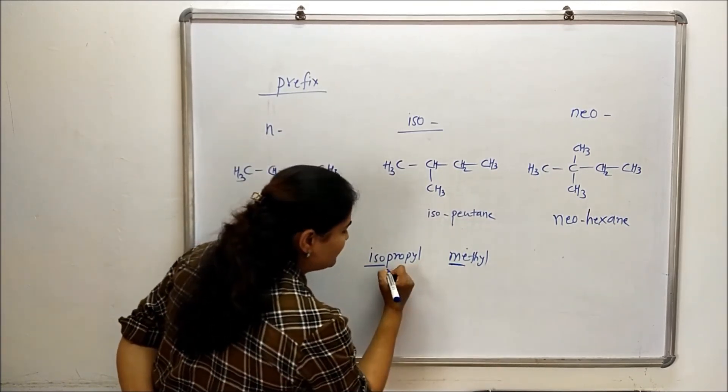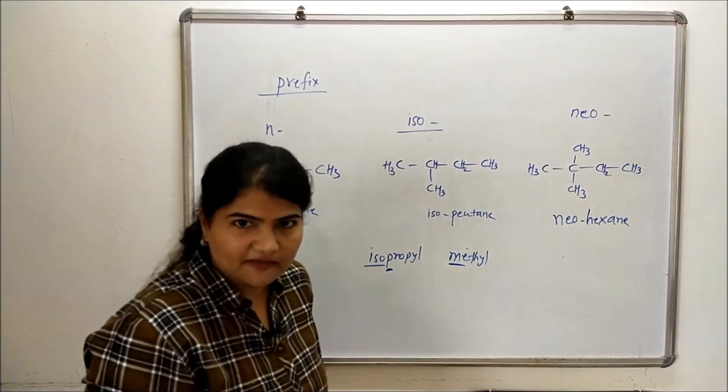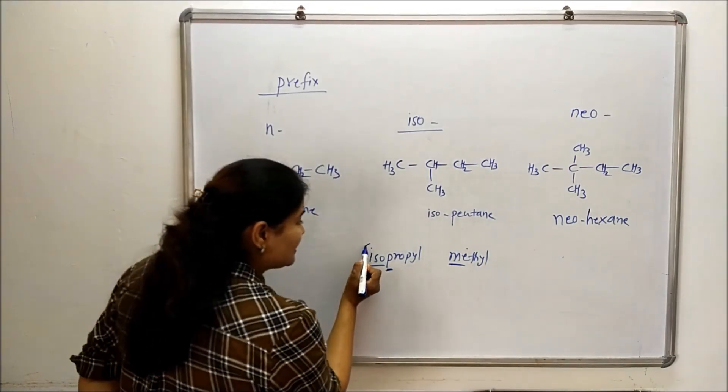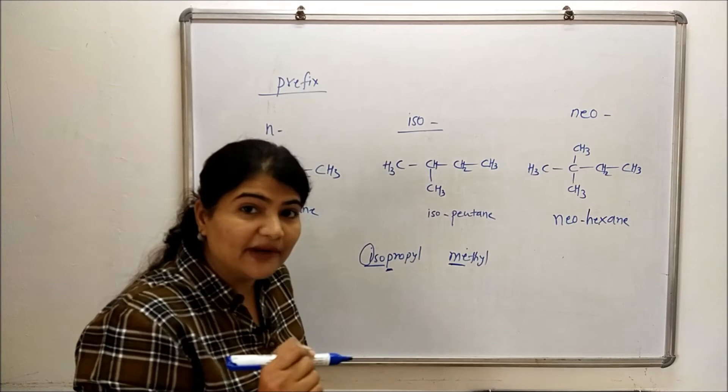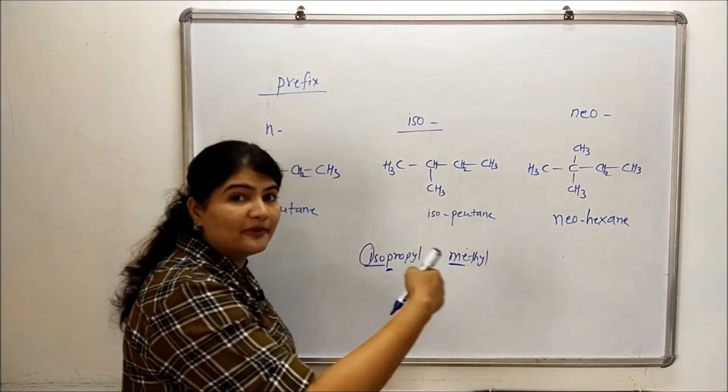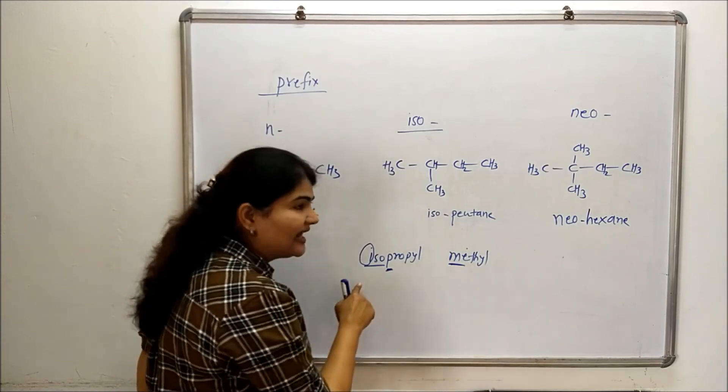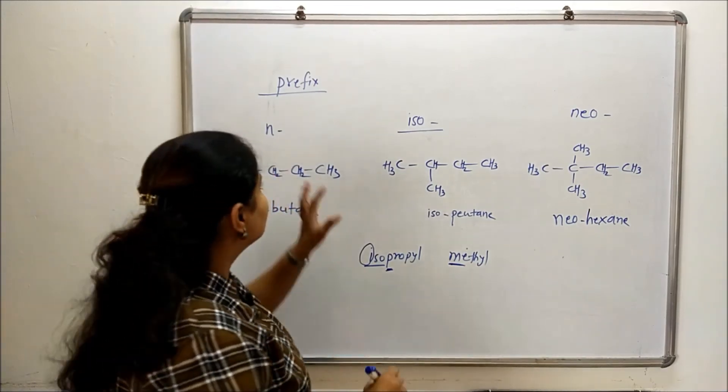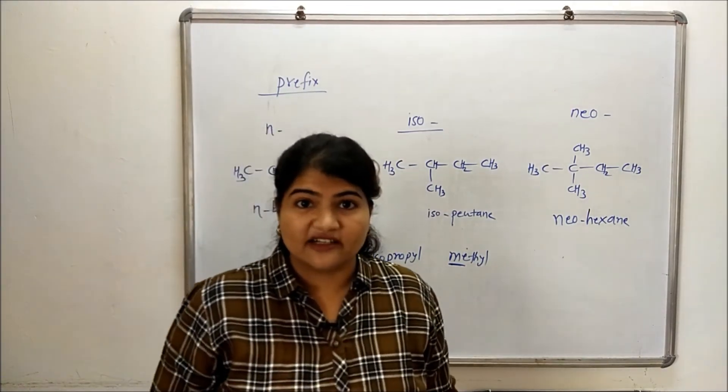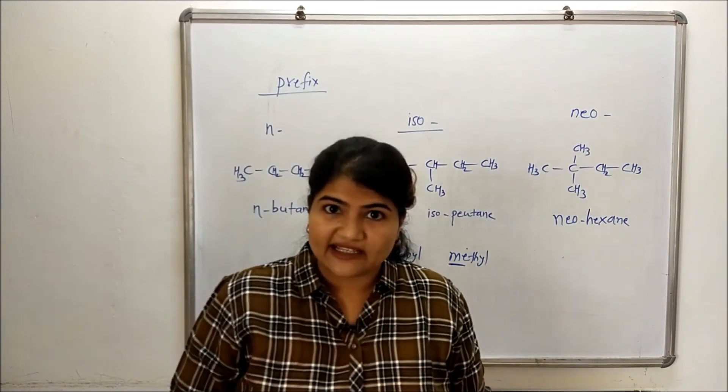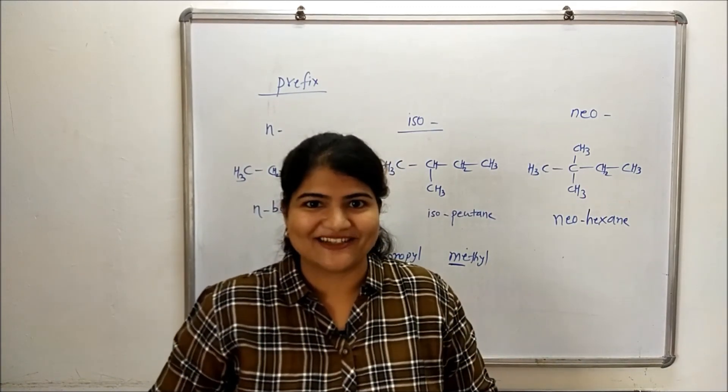You will use M and P. So who comes first? M comes first. So although it starts with I and you may be tempted by starting this isopropyl group by writing it first, don't do that. First write methyl and then isopropyl because these prefixes are not considered while alphabetizing the alkyl groups in IUPAC nomenclature.